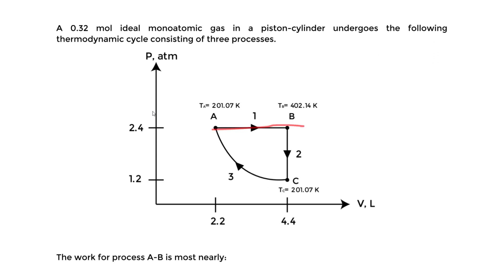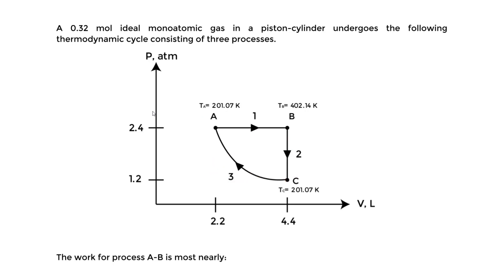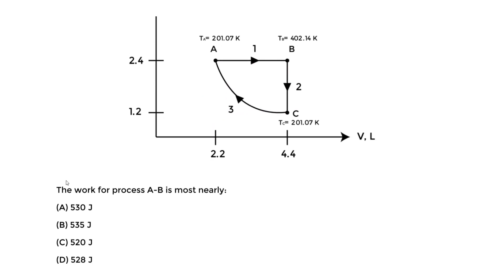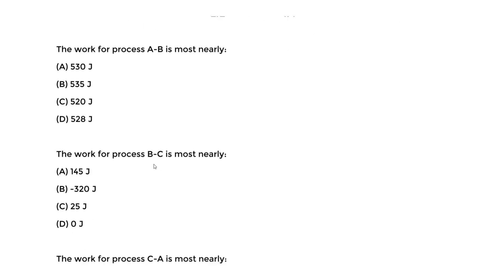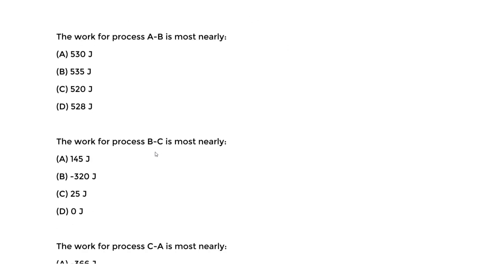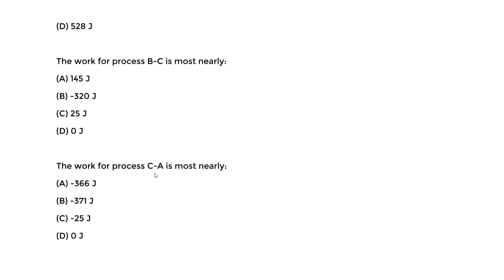We go from A to B, B to C, then from C to A — process one, two, and three. What we want to do is find the work in process AB, the work in process BC, and the work in process CA — essentially the work in each process.